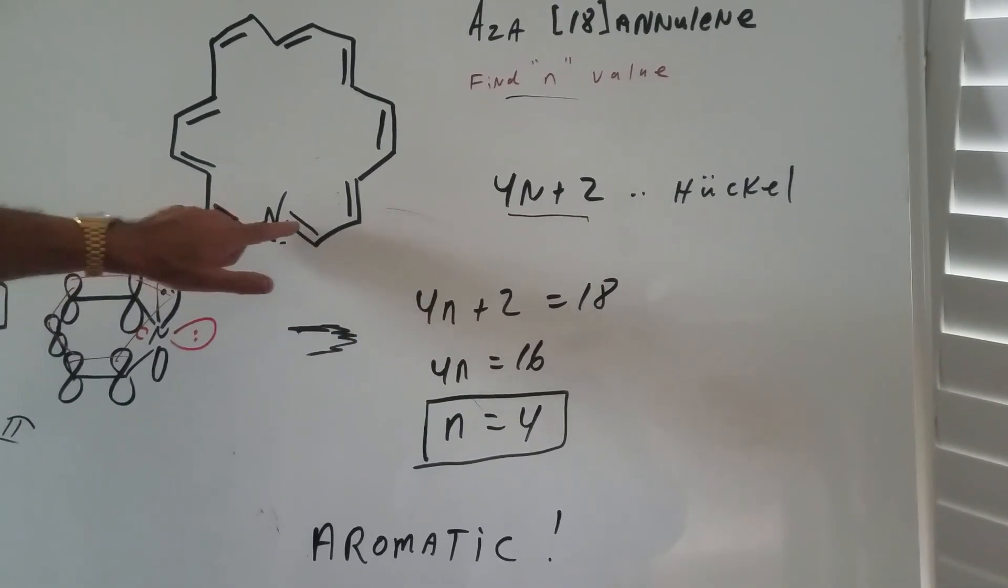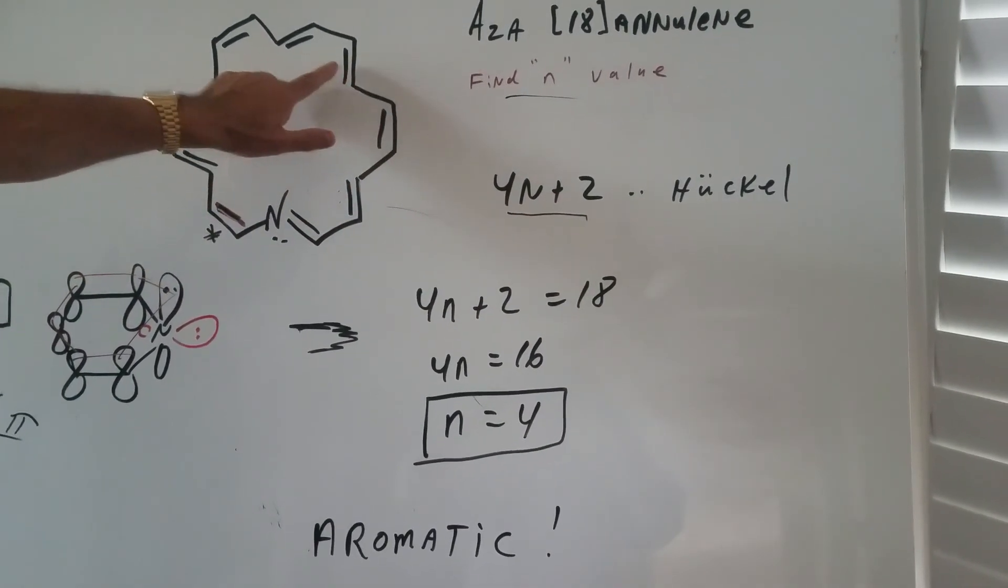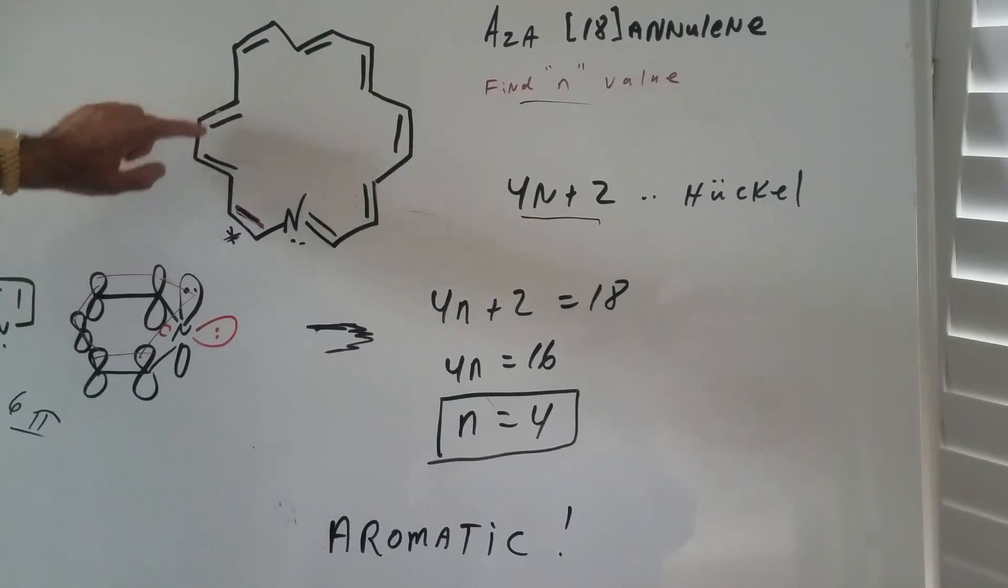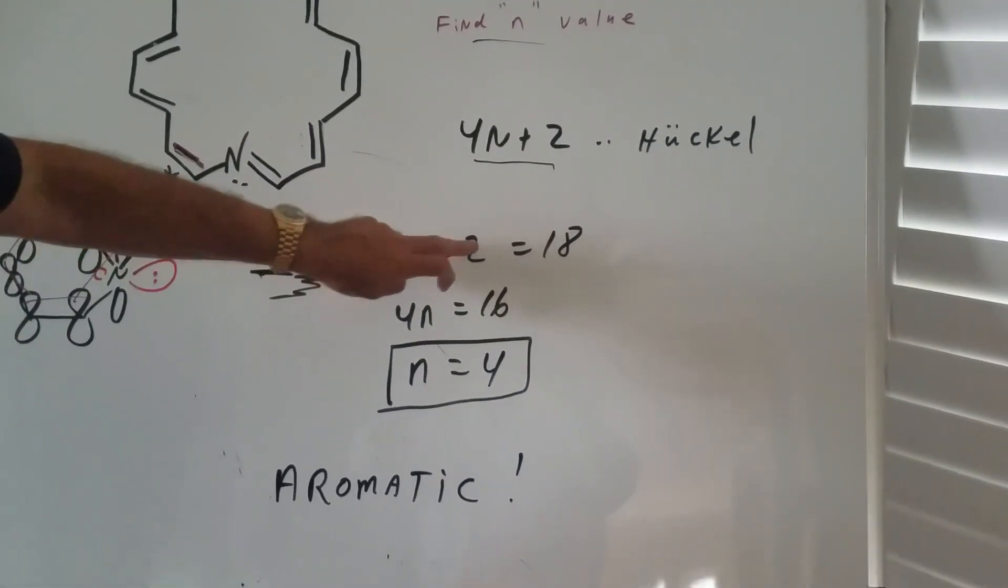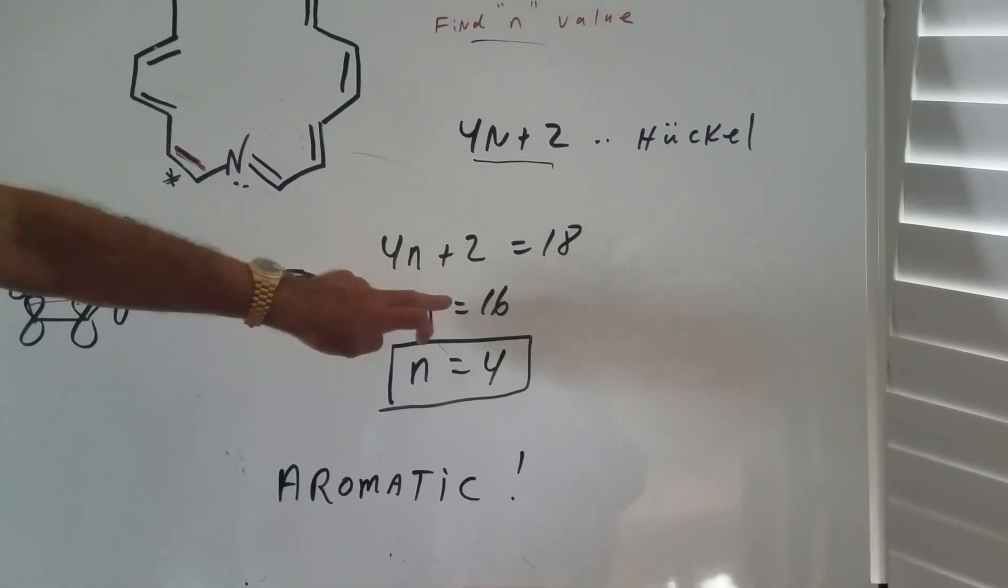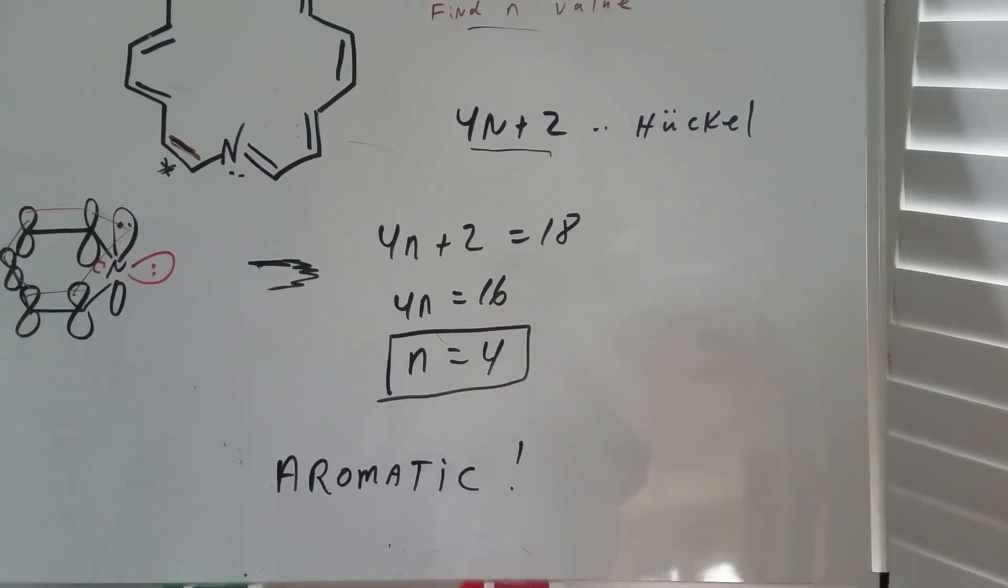So we have two, four, six, eight, ten, twelve, fourteen, sixteen, eighteen. Four n plus two rule, we set it equal to 18. I get four n after you subtract two is 16 and we get n as four.